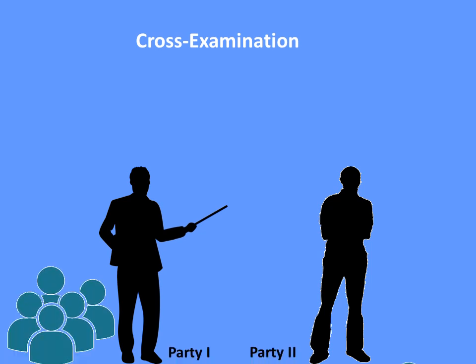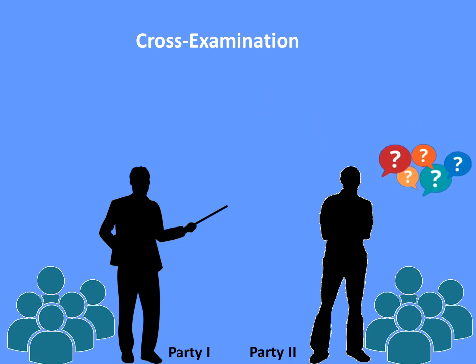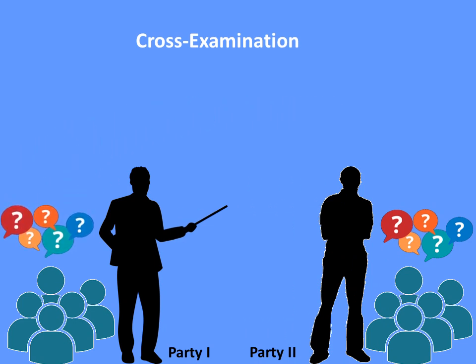In cross-examination, both parties have already stated their own stories. Now the court gives each party a chance to discredit the story of the opposite party and prove that their story is the only true one. Party One starts asking questions to Party Two's witnesses, and Party Two starts asking questions to Party One's witnesses. In this questioning, they are trying to prove that what the witness is saying is not true, has flaws, and is not worth believing.